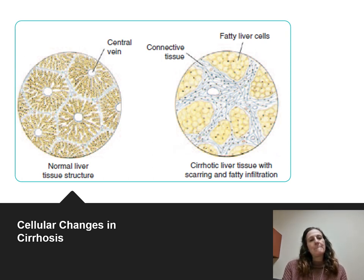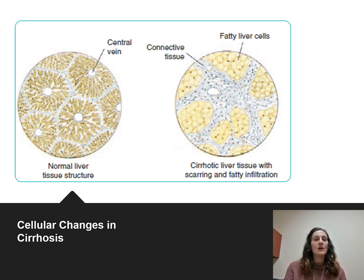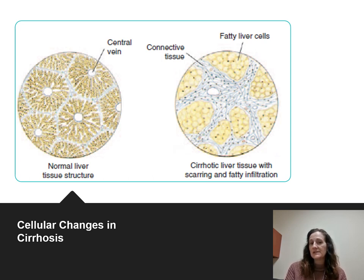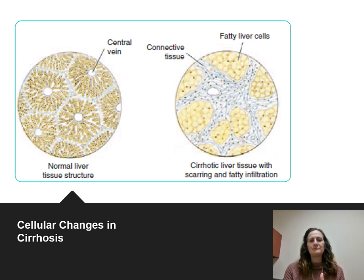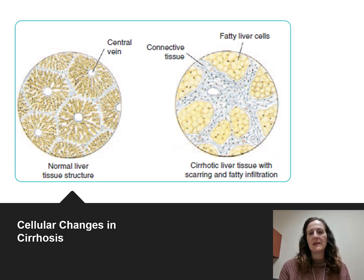This picture shows on the left what a normal liver tissue looks like. On the right is someone who has fatty liver disease and cirrhosis of the liver — you can see the scarring and where the fatty infiltration occurs, which usually occurs in cirrhosis.